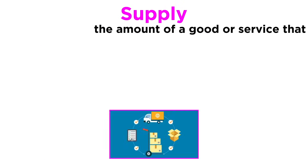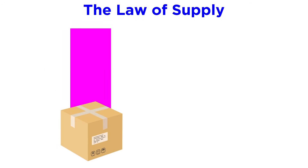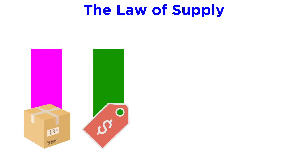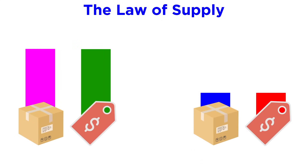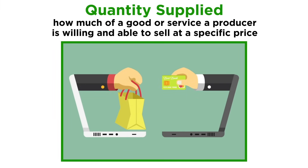With demand covered, now let's look at supply. Supply is the amount of a good or service that is available. According to the law of supply, producers offer more of a good or service as its price increases, and less as its price falls. Economists use the term quantity supplied to illustrate how much of a good or service a producer is willing and able to sell at a specific price.